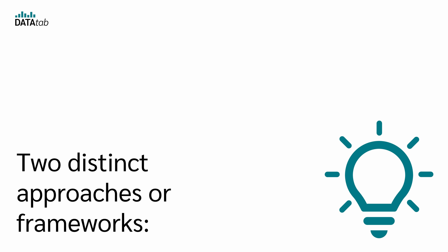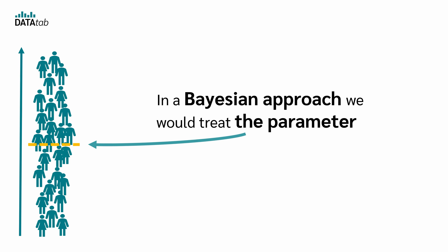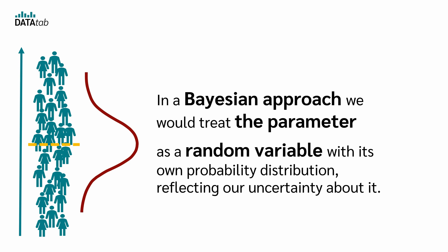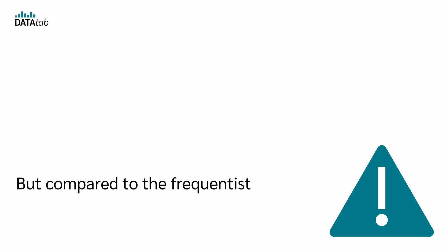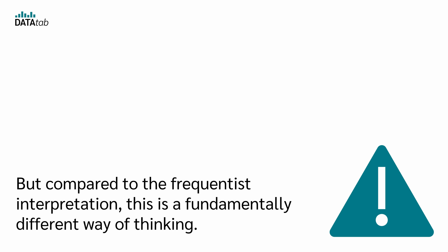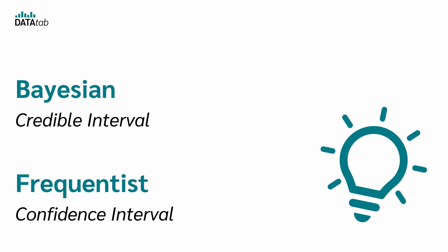A side note. In statistics, there are two distinct approaches or frameworks: the frequentist and the Bayesian. The confidence interval is a method used in the frequentist approach. In the Bayesian approach, we would treat the parameter as a random variable with its own probability distribution, reflecting our uncertainty about it. In that framework, it would make sense to say that, given our data, there is a certain probability that the parameter will fall within a certain range. But compared to the frequentist interpretation, this is a fundamentally different way of thinking. In the Bayesian approach, there is a concept known as the credible interval, which serves as the counterpart to the confidence interval in frequentist statistics.